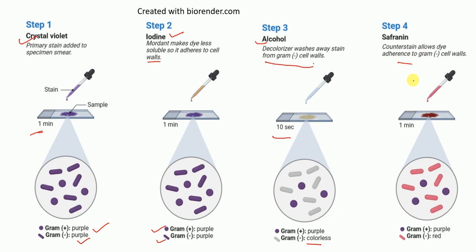Safranin is added and it is allowed to stand for about one minute. By the end of this step, gram negative bacteria appear red because they take up the color of the safranin, whereas gram positive bacteria still appear purple. So by the end of the gram staining procedure, gram positive bacteria are stained purple whereas gram negative bacteria are stained red.